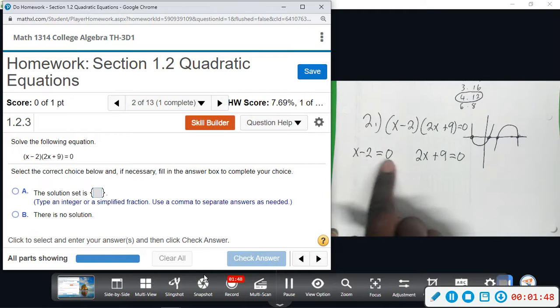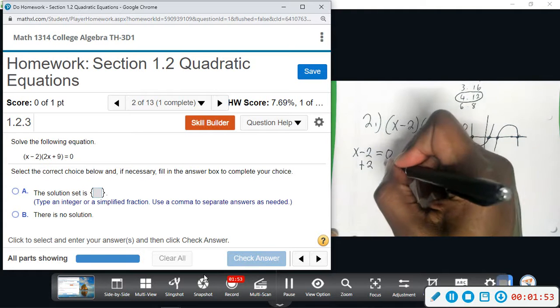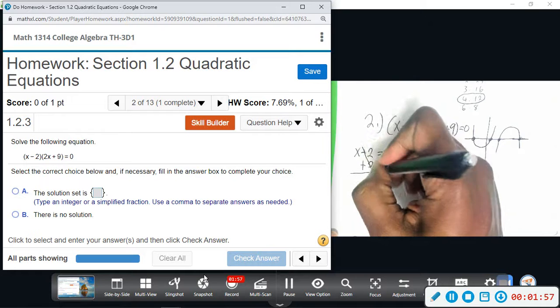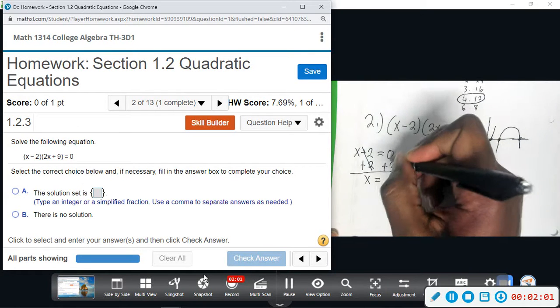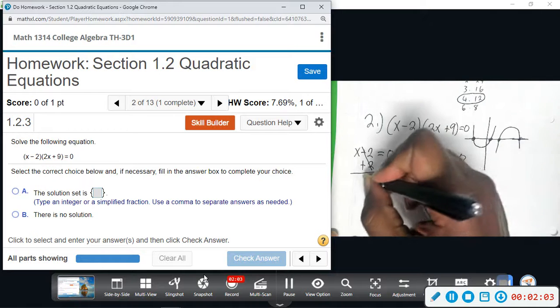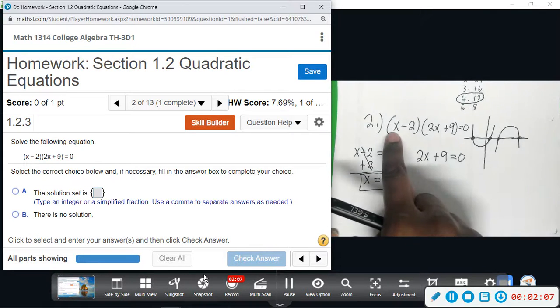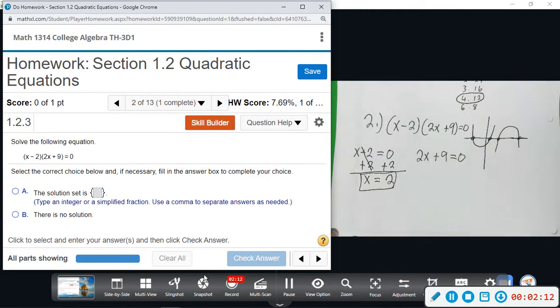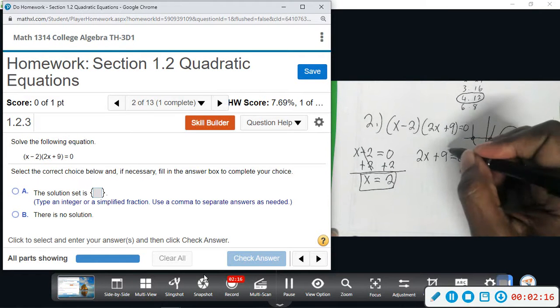So solving for x, we would have to add 2 to get rid of the minus 2. We do that to both sides of the equal sign. This goes to zero, we bring down our x, bring down equals, zero plus 2 is 2. So one of our solutions is 2. If we plug a 2 here, 2 minus 2 is 0. 0 times, doesn't matter what this is, is going to be 0. 0 times any number is zero.